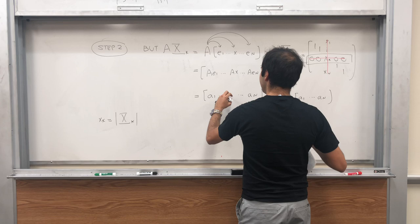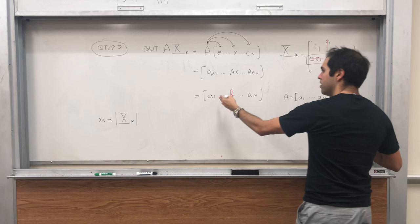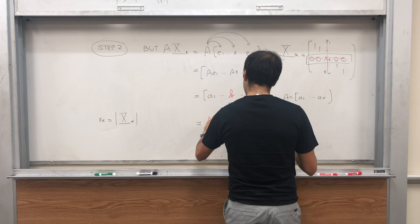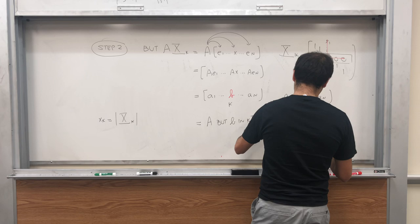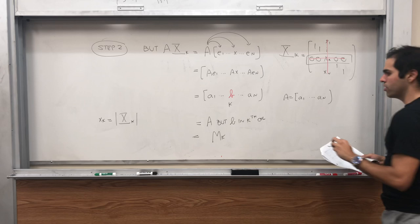Everything is the same except this little thing. What is Ax? It's precisely b. That's just our definition of x, set of solutions of Ax = b. And what is that? Well, this matrix, the columns are exactly the columns of A except with b in the kth column. A but b in the kth column. And that is, by definition, that is Mk.